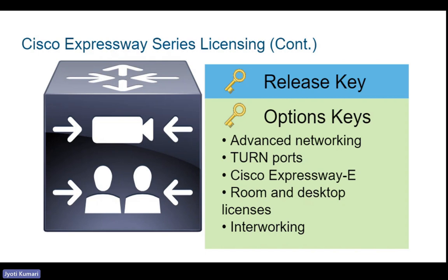Once you have entered the release key in your Expressway system, you can enter all option keys at the same time or later on. You go to the product license registration portal to activate the PAK, and with option keys you will see the product IDs — called PIDs — that you ordered. During license activation, you can select the feature PIDs you need for the Expressway device, assign them by providing the serial numbers, and then activate the option keys on the Expressway.